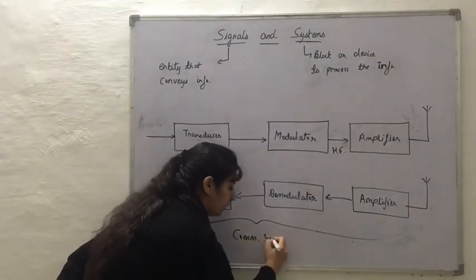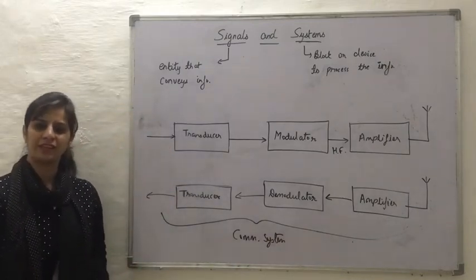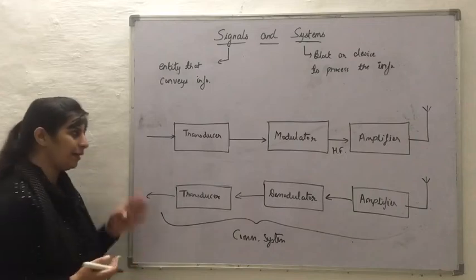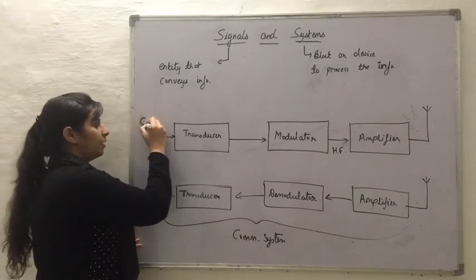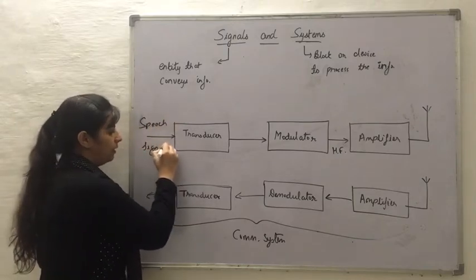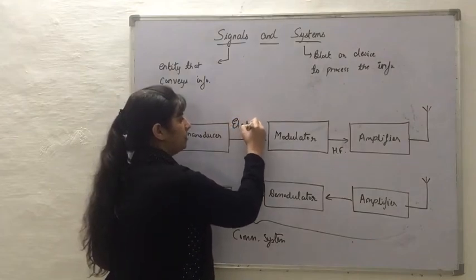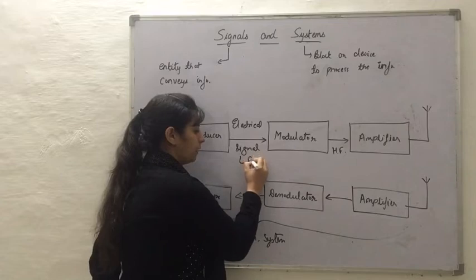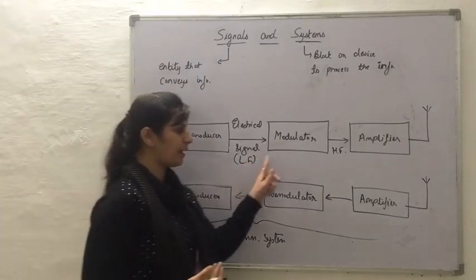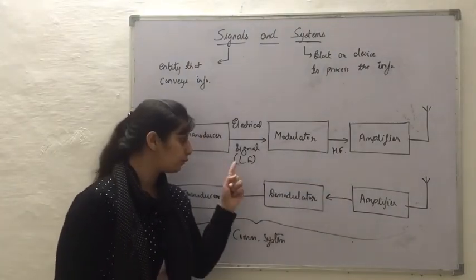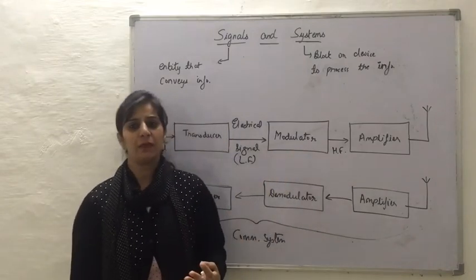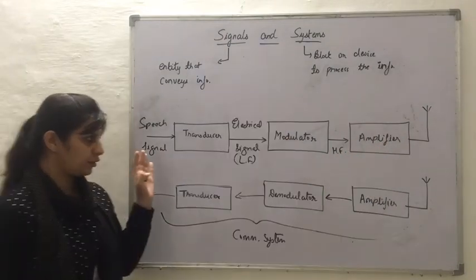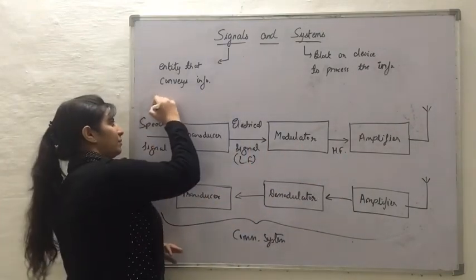We have these blocks that make up the communication system. The first block is a transducer — a device that converts one form of energy into another. When we want to transmit a speech signal, we convert it into an electrical signal using a transducer. This electrical signal from the transducer is a low-frequency signal. Since a signal to be transmitted must be a high-frequency signal, we use a modulator to convert it. This high-frequency signal is then transmitted at large amplitudes over longer distances using an amplifier. These three blocks — transducer, modulator, and amplifier — make up the transmitter side of the system.